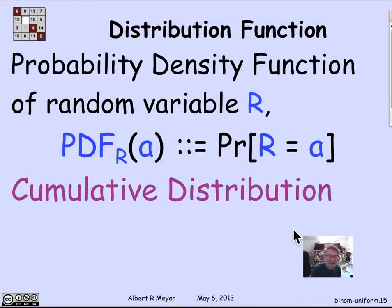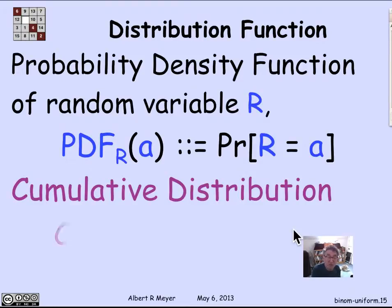A closely related function that describes a lot about the behavior of a random variable is the cumulative distribution function. It's simply the probability that r is less than or equal to a. So it's a function on the real numbers where CDF r of a is the probability that r is less than or equal to a. Clearly, given the PDF, you can get the CDF. And given the CDF, you can get the PDF. But it's convenient to have both around.